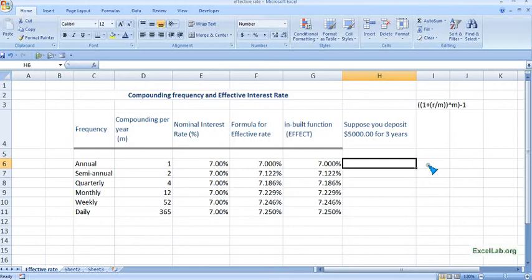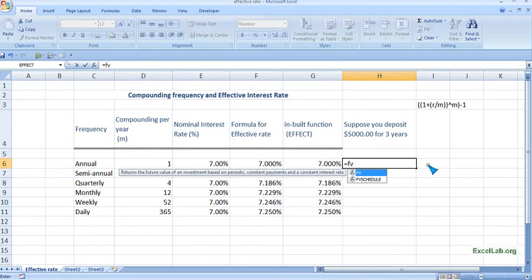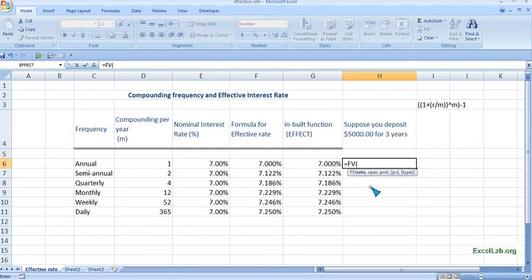Put equal to, and we will see what is the future value. So put FV. You can see the syntax—click on this. First, it is asking for rate, so the rate for annual is seven percent. Next is number of periods, which is three years.